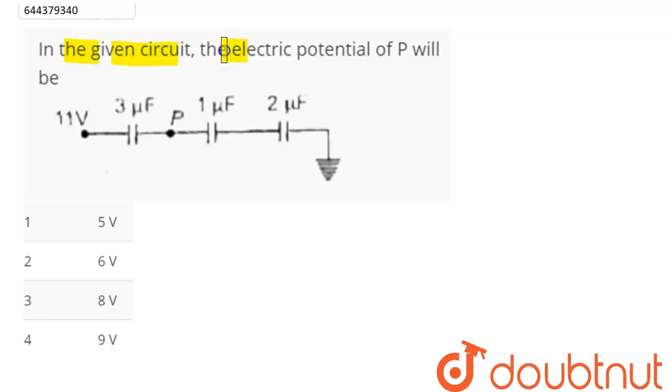Question is: in the given circuit, the electric potential of P will be. Here this is 11 volt and this here is earthing, that is 0 volt.